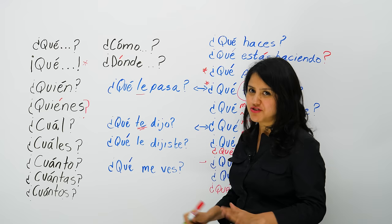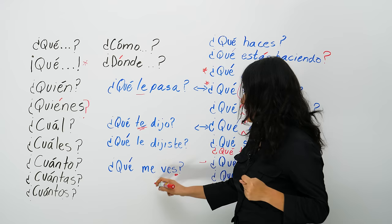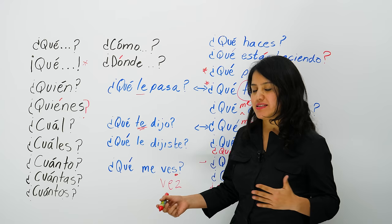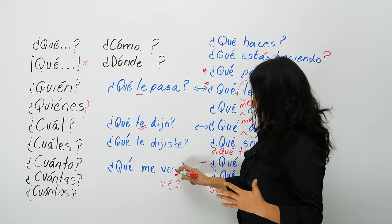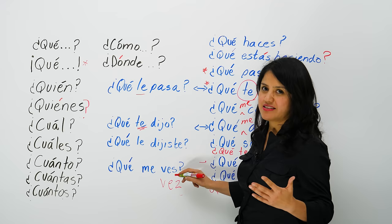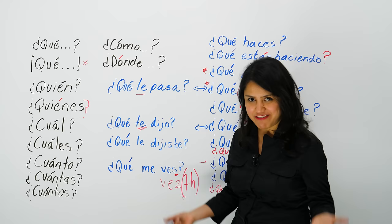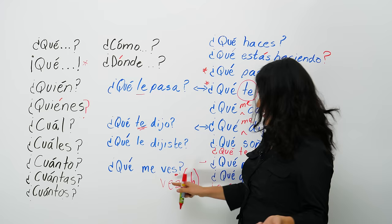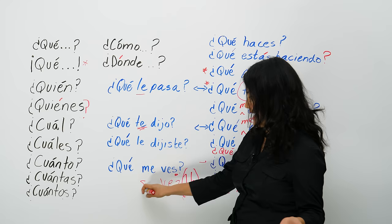Use 'qué me ves' with someone you like, trust, and have a friendship or relationship with — not a stranger. Now, 'ves' with a 'v' is different from 'vez' with a 'z.' 'Vez' means 'time,' as in 'primera vez' — the first time. In Spain they distinguish these sounds, but in Latin America both sound like an 'S.' La primera vez — muy bien.